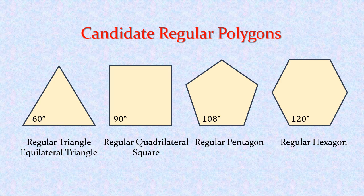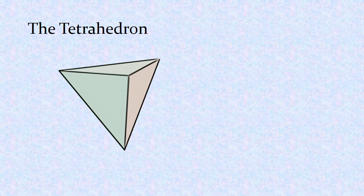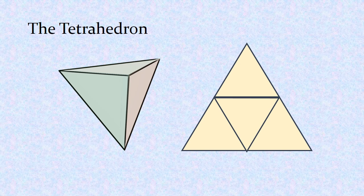Now let's look at each one of the regular polyhedra and see what they look like. The tetrahedron, which is sometimes called a triangular pyramid, looks like this. And if it were hollow and made out of paper and we unfolded it, it might look something like this. So this pattern, if we were to cut it out on paper, fold it up and glue or tape it together, you would get the tetrahedron.